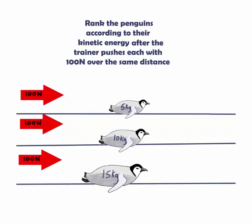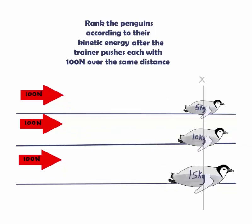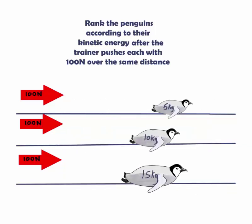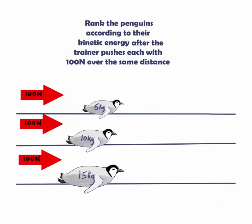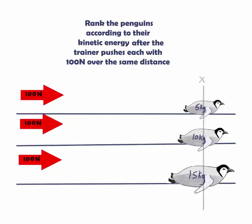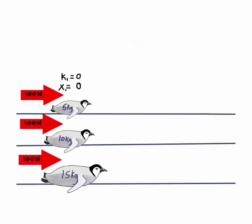Which penguin will have the least kinetic energy? In this case, all penguins have the same kinetic energy. Why? They are initially at rest. So we set the initial kinetic energy and initial position to zero.